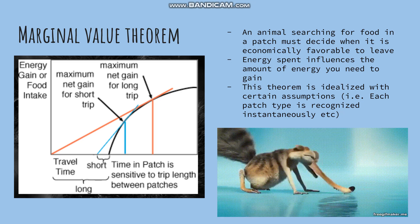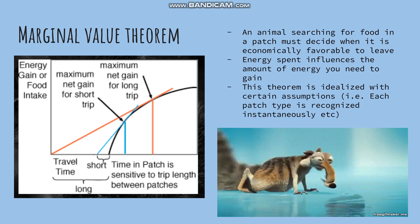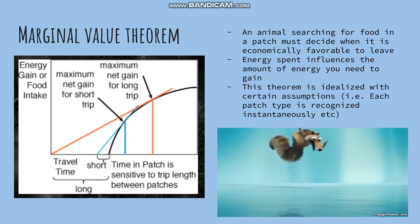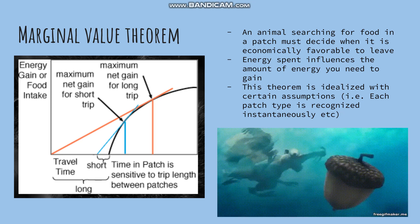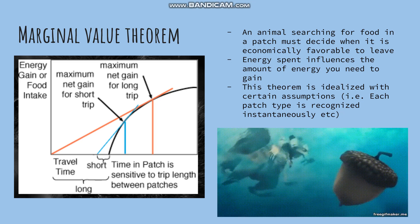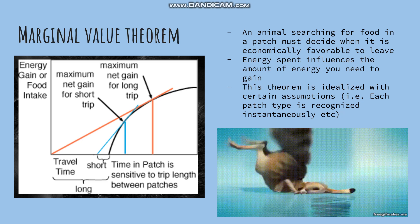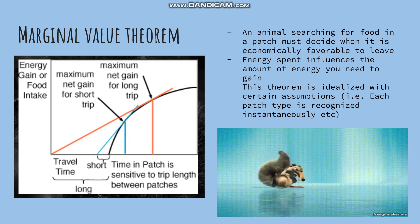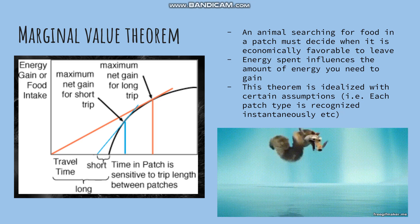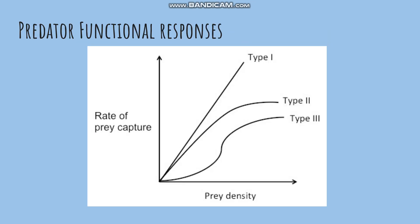The marginal value theorem graphs energy gain or food intake as a function of travel time to patches of food. The tangent to the curve represents the maximum net gain of that trip. How much energy you spend influences the amount of energy you need to gain, and the amount of time it takes to search for prey depends on the density of the prey.